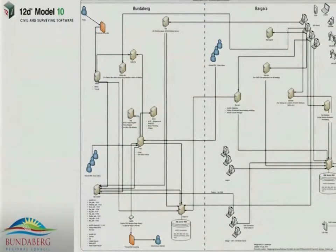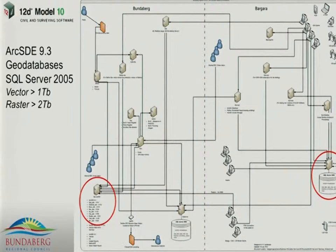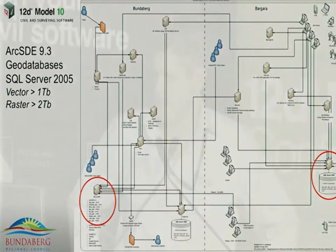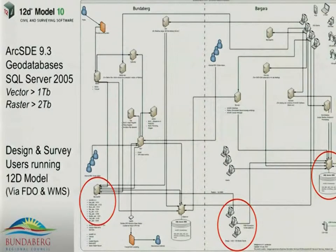This is a schematic of the GIS architecture — we're not going to go into it in detail to prevent any brain haemorrhages. Basically we've got Arc SDE 9.3 geodatabases sitting on SQL Server 2005. We've got two of those, one in the Bargara office where I work and one in the Bundaberg office. The vector data we're connecting to is over one terabyte, including our LiDAR point clouds, and the raster data sets are just over two terabytes and growing. We use the FDO provider to connect from survey and design and also out in the field using 12D Field.